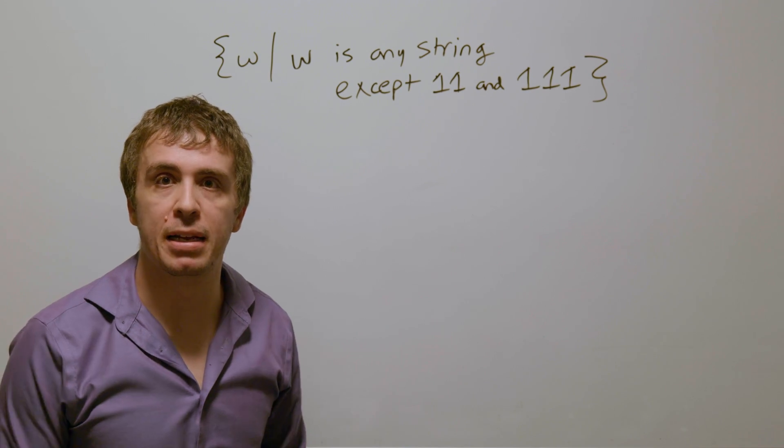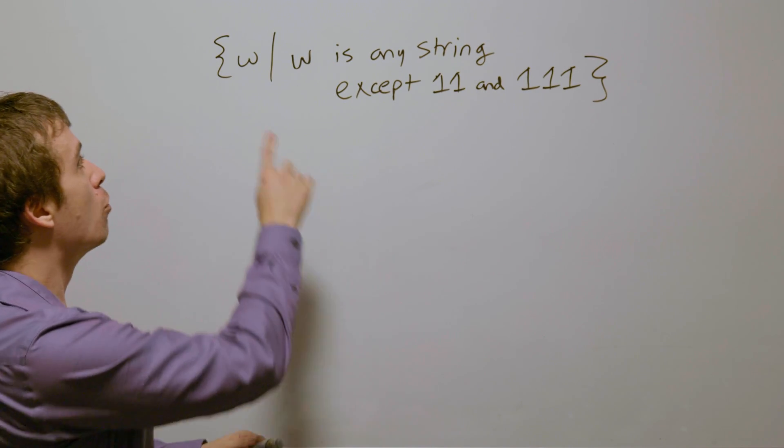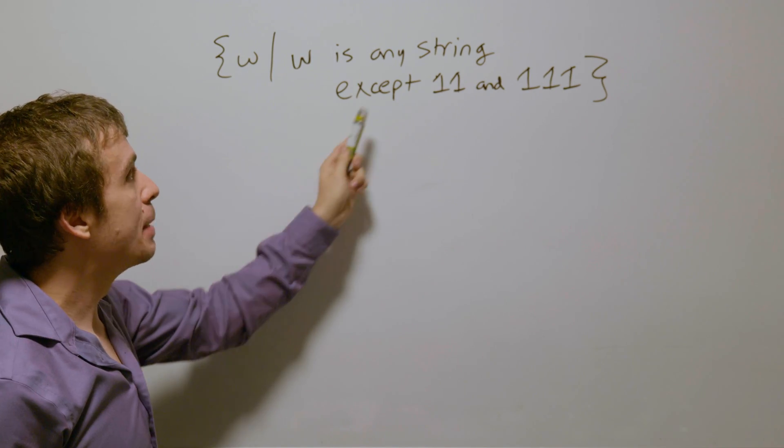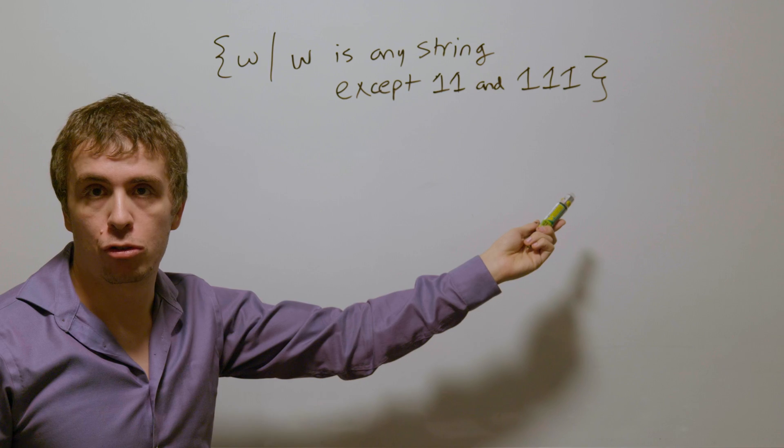Let's make a deterministic finite automaton for this language, which is the set of all binary strings w, where w is any string except 11 and 111.